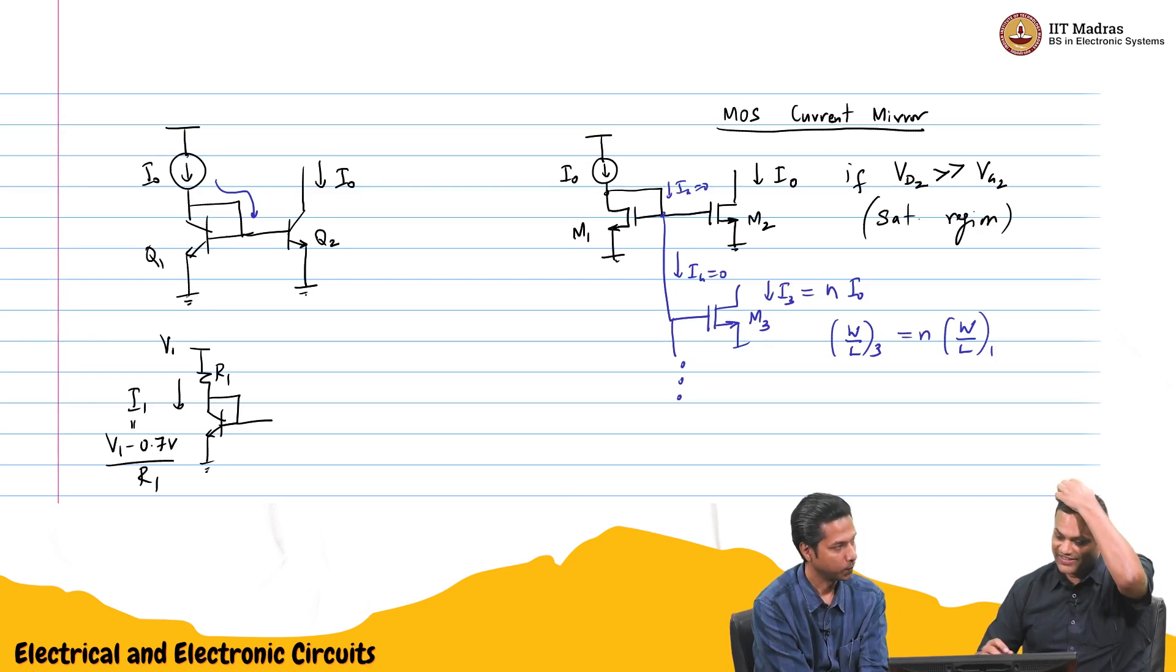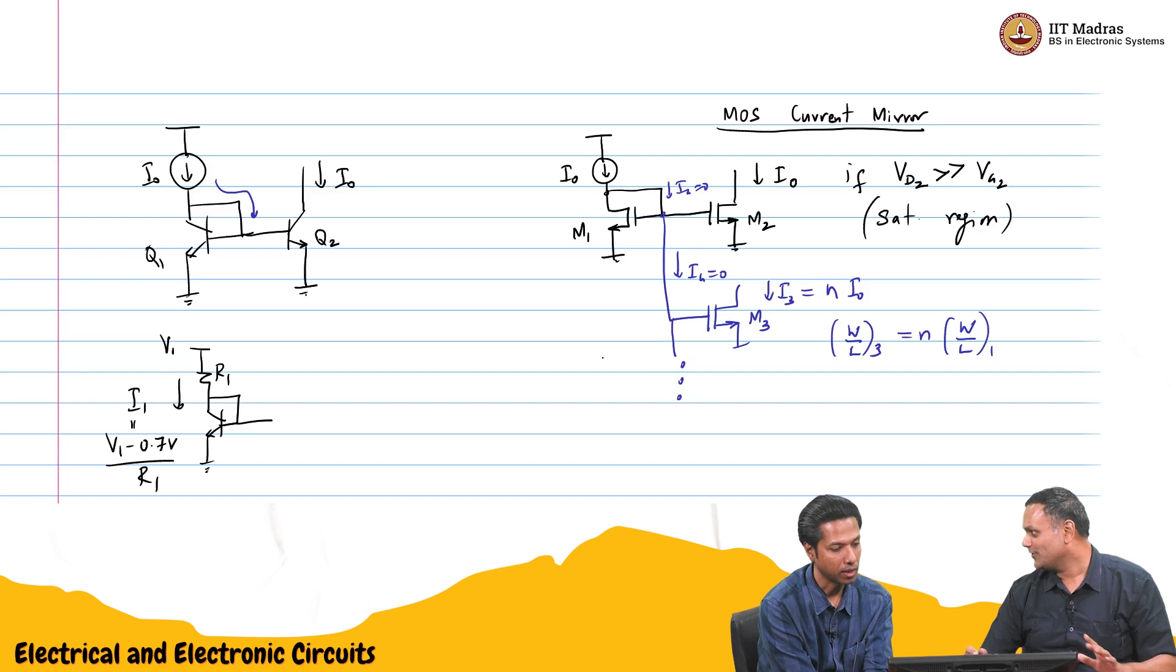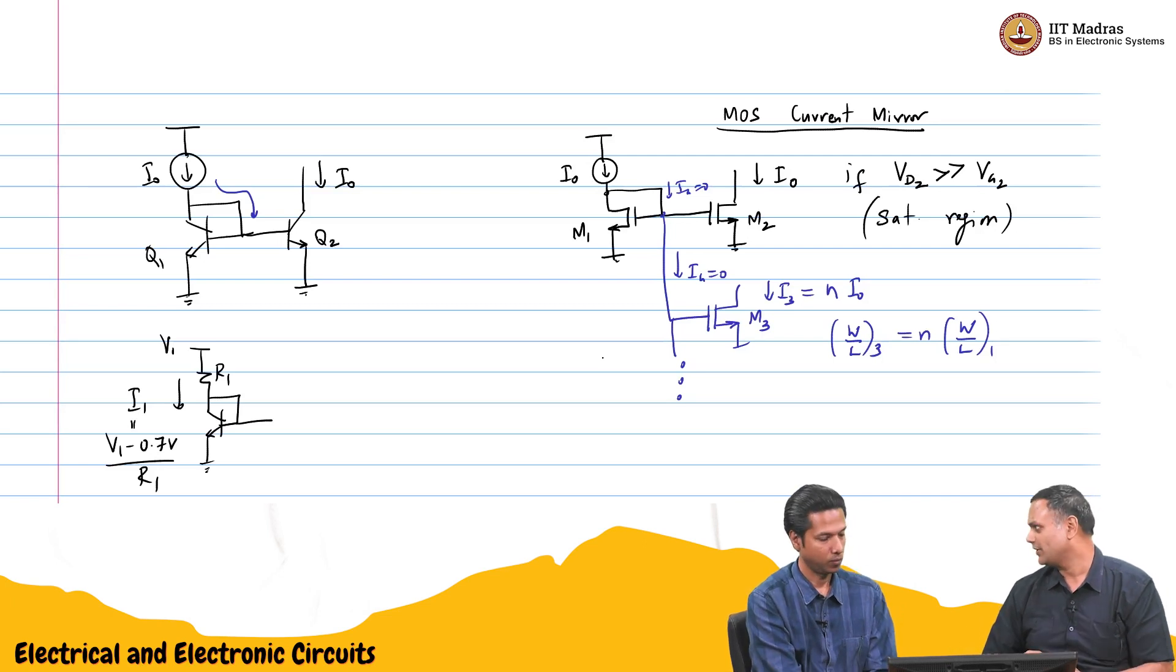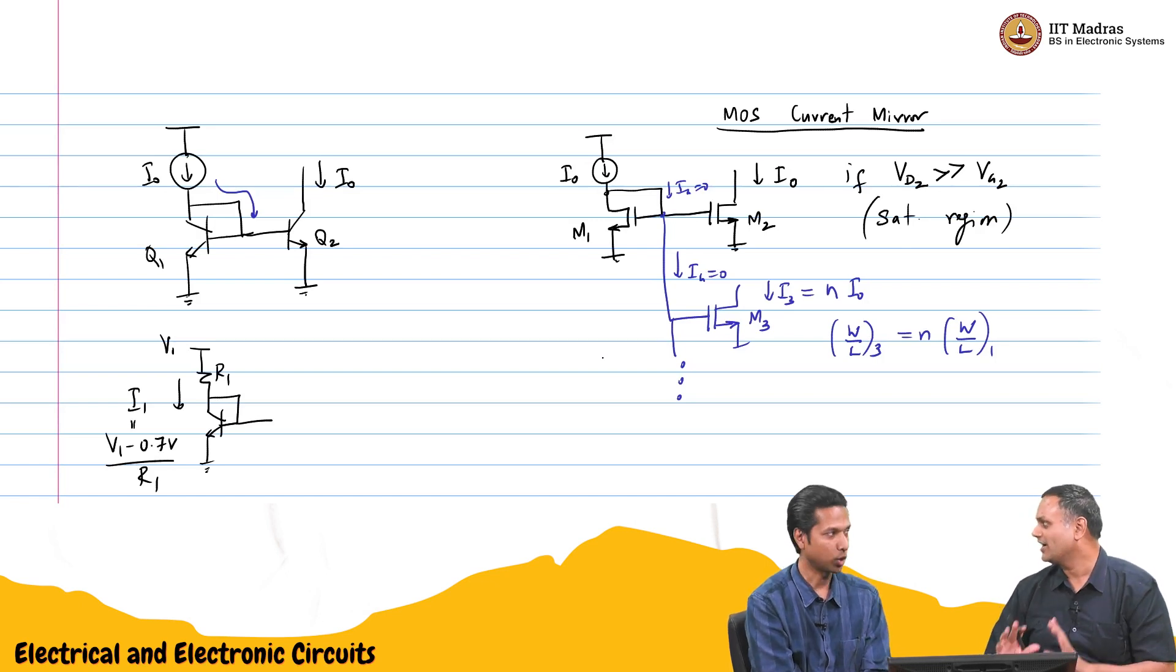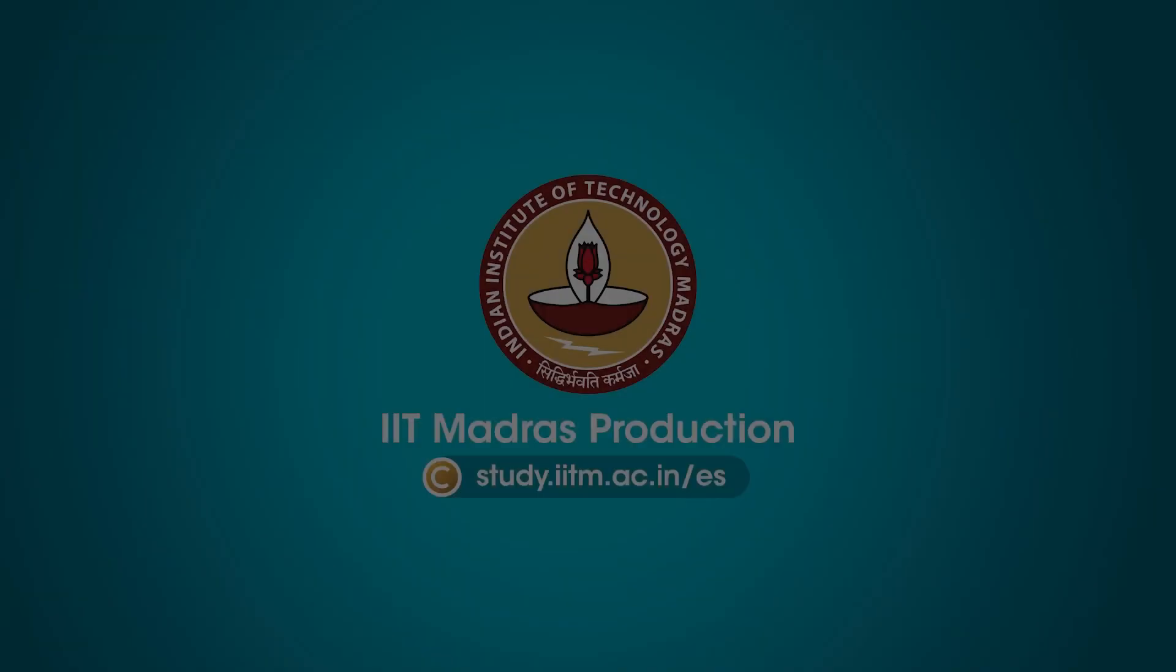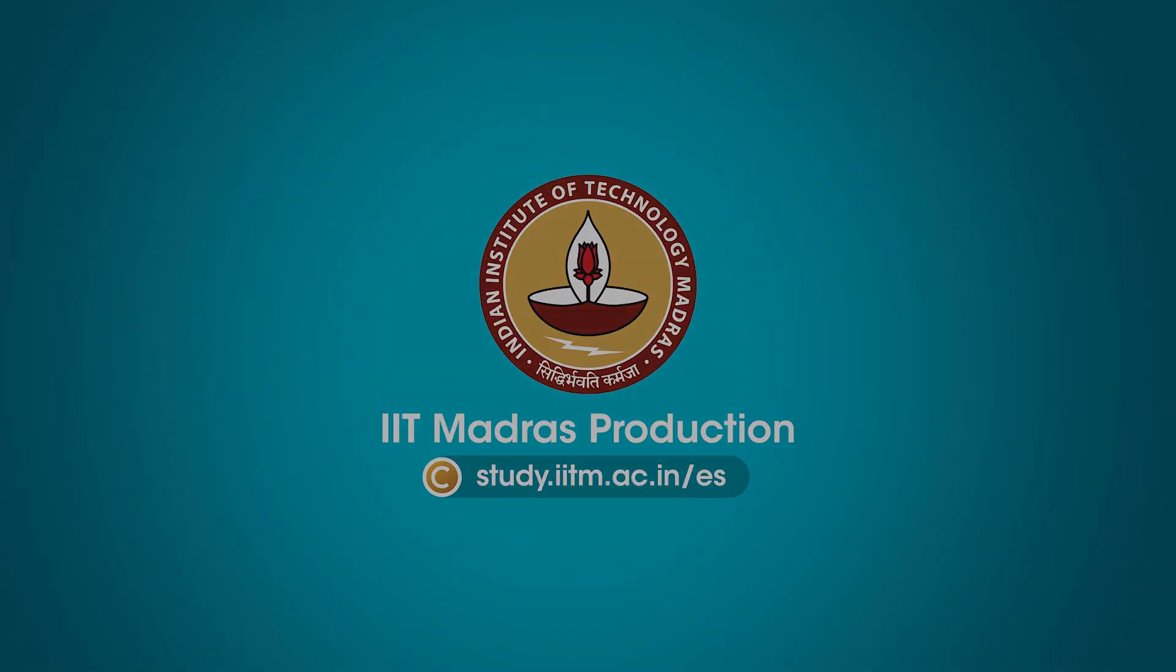So anyway, you can do the same thing here also. Solve the quadratic equation - once you know K, W over L, mu Cox W over L, or K, you can solve for it to find out what value of resistor you should put for a current that you want. Well done. We were close. All right, thank you.